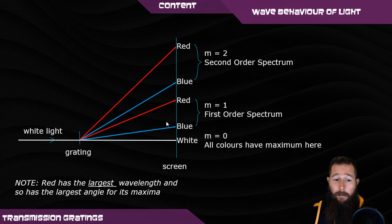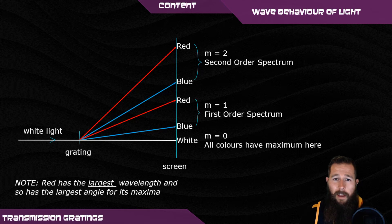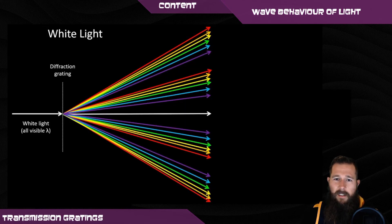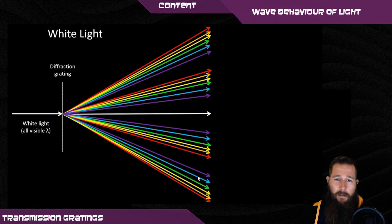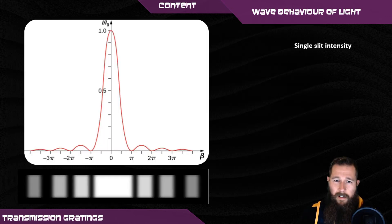This area represents the first-order spectrum and this is the second-order spectrum. In some cases, depending on the geometry of the setup, these two spectra can overlap. The diagram breaks this down further to illustrate how these areas could possibly overlap in some cases.